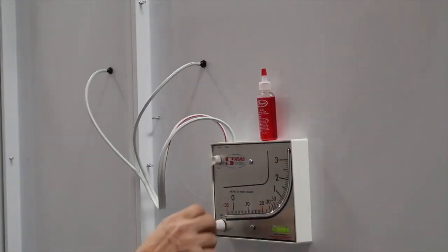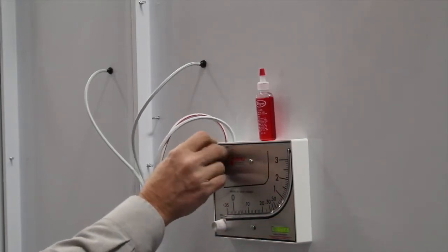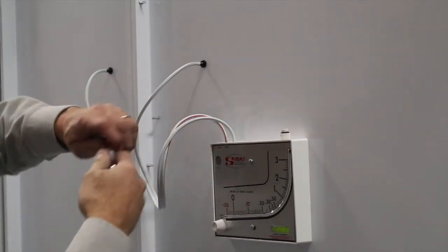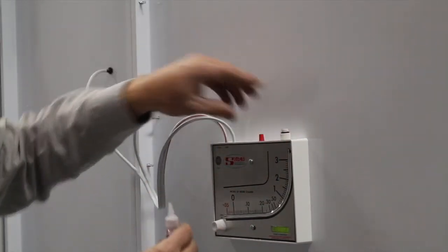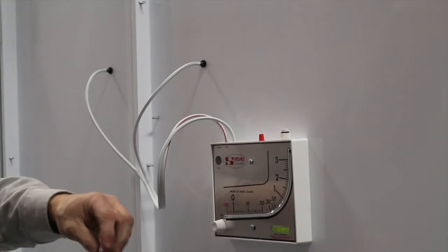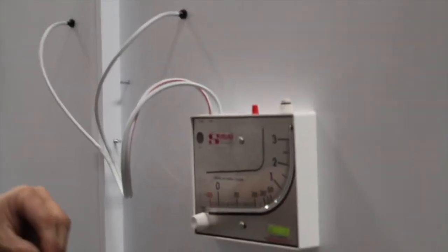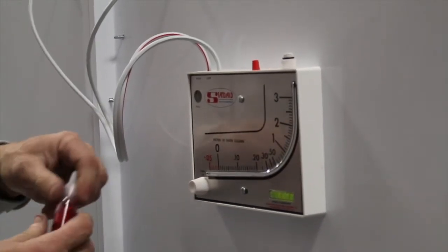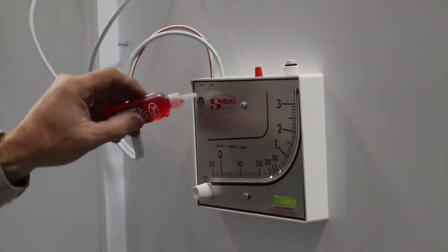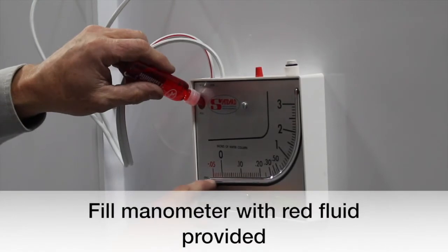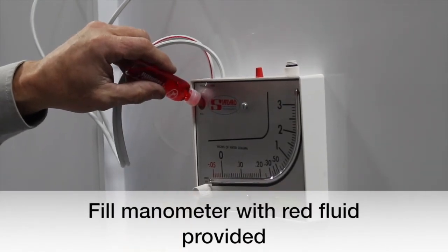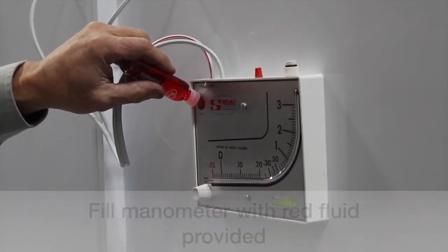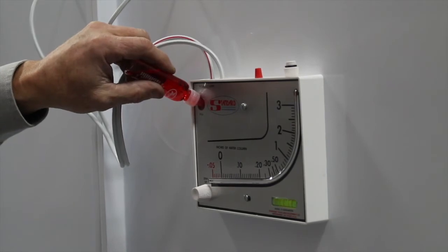Fill this with fluid. This is zero set, all the way into the right. Take that out. This fluid is a specific gravity fluid. It comes with the manometer. Take that piece out. Watch here for the red to start showing up, because you won't use the whole bottle.